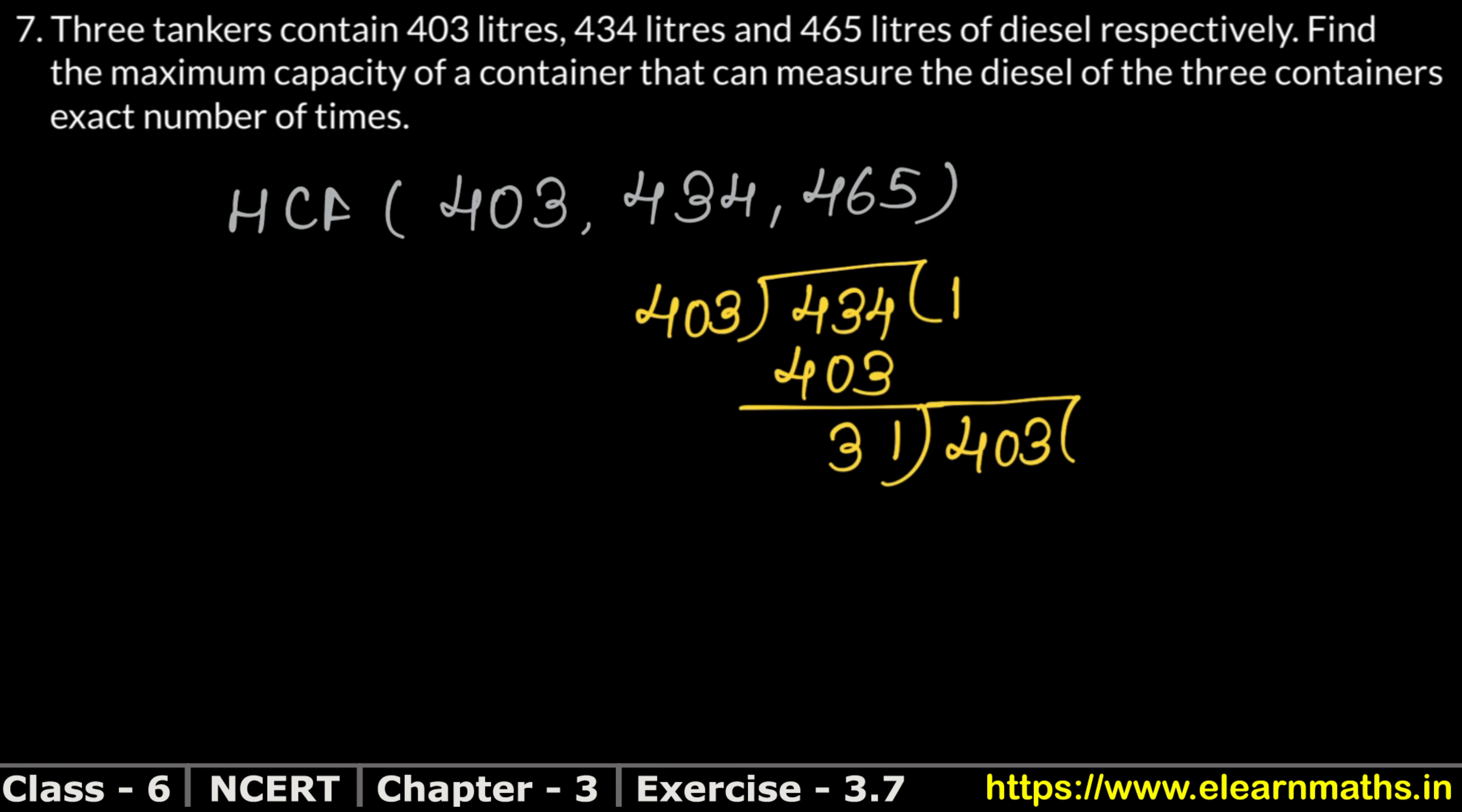And what happened inside? 403. Now let's see how this will go, 31 into 403. 31 times 1 is 31, and 93 minus 93 gives 0. So 31 is such a number which has exactly divided, right?